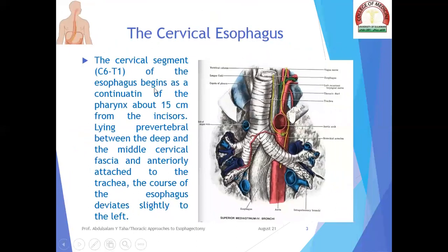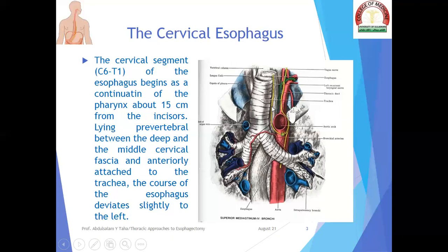The cervical segment extends from C6 to T1 and begins as a continuation of the pharynx, about 15 centimeters from the incisor teeth. It lies in front of the spine — pre-vertebral — and is surrounded by the deep and middle cervical fascia. Anteriorly, it is attached to the trachea. In the neck, the esophagus slightly curves or deviates to the left side, lying behind the trachea and the left main stem bronchus.